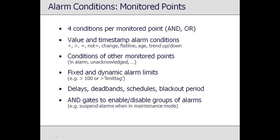Alarm limits can be fixed, like the number 50, or can be retrieved from the current value of other points. The recognition of an alarm condition can be more complex than just the condition violation, allowing the use of delays, dead bands, schedules, and blackout periods. For example, the alarm condition can be value greater than 100 for 90 seconds Monday through Friday, and not within 20 minutes of a previous occurrence.